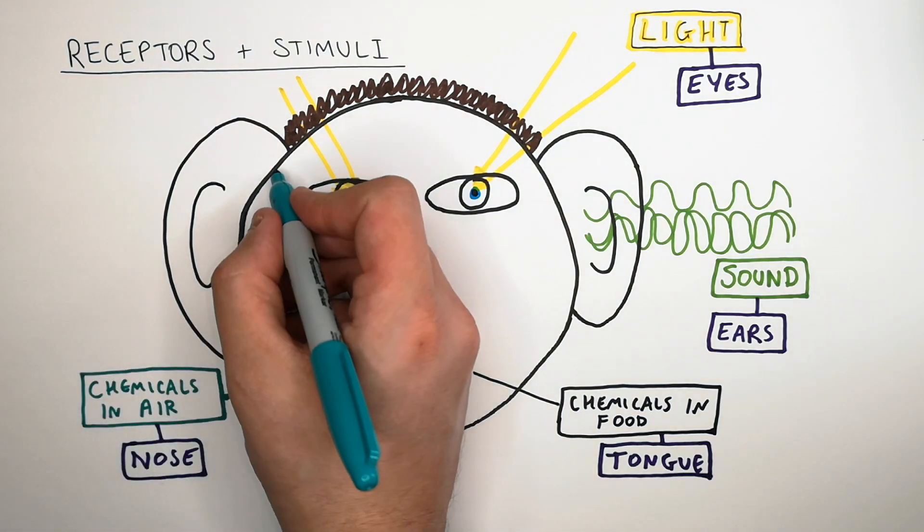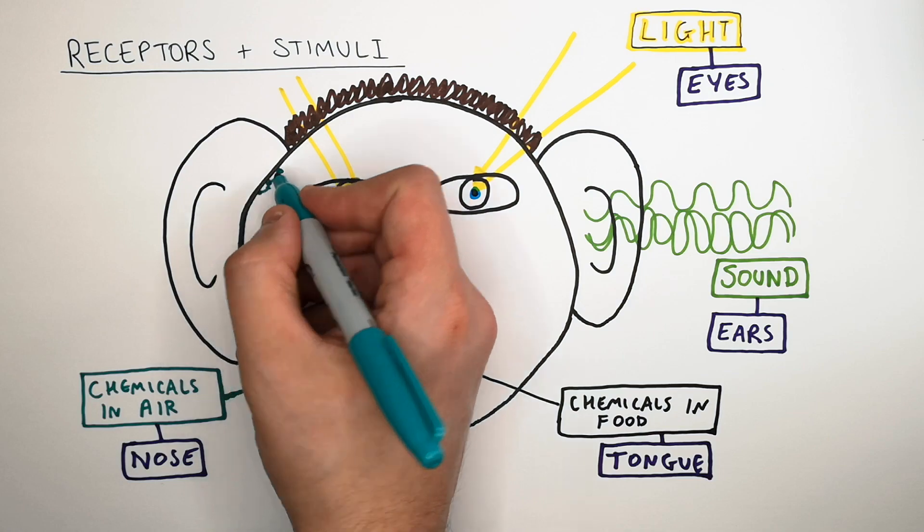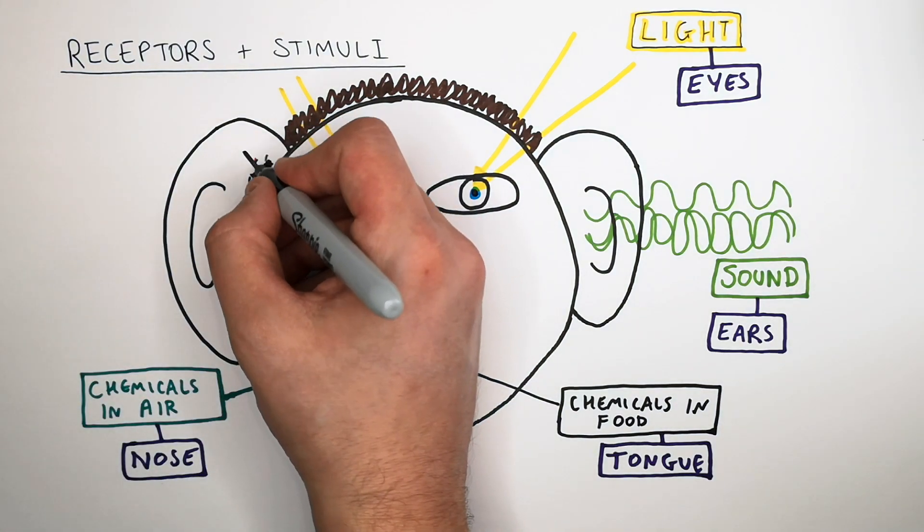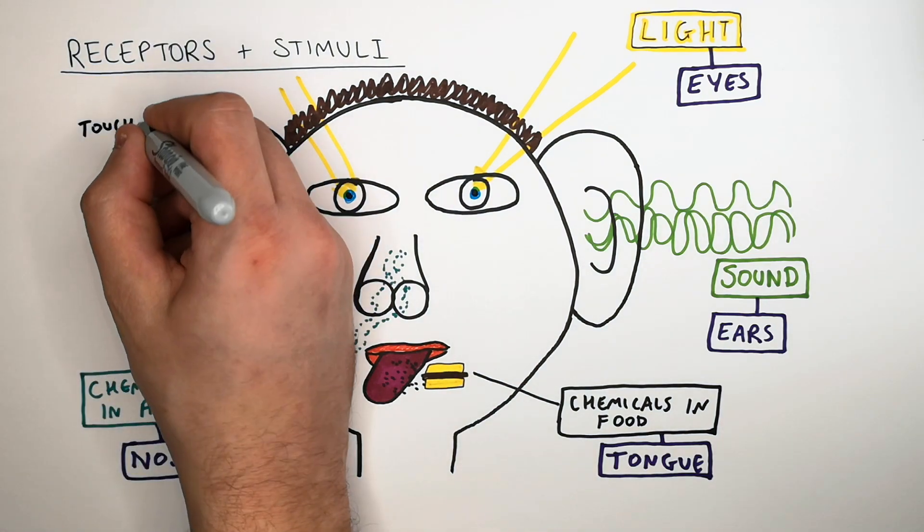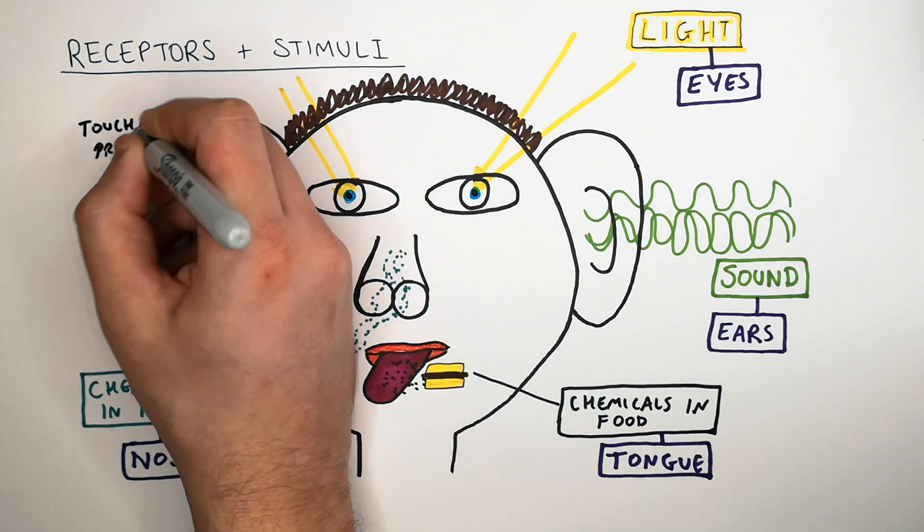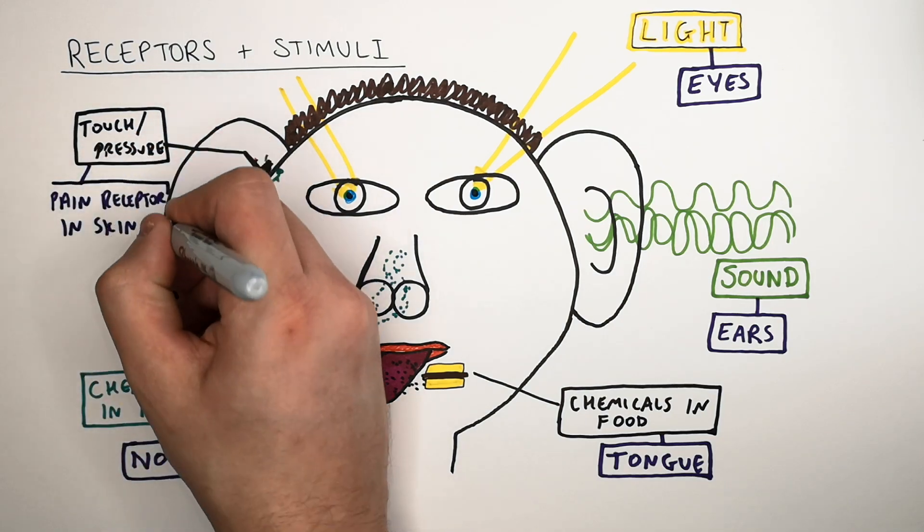You have pain or pressure receptors in your skin. These are receptors that detect pressure or pain or a change in temperature. Touch or pressure or changes in temperature are detected by pain or pressure receptors in your skin.